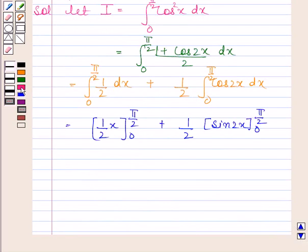Now this is equal to 1 by 2 into pi by 2 minus 0. We have substituted the upper limit and then we have substituted the lower limit, plus 1 by 2 into sin 2x.